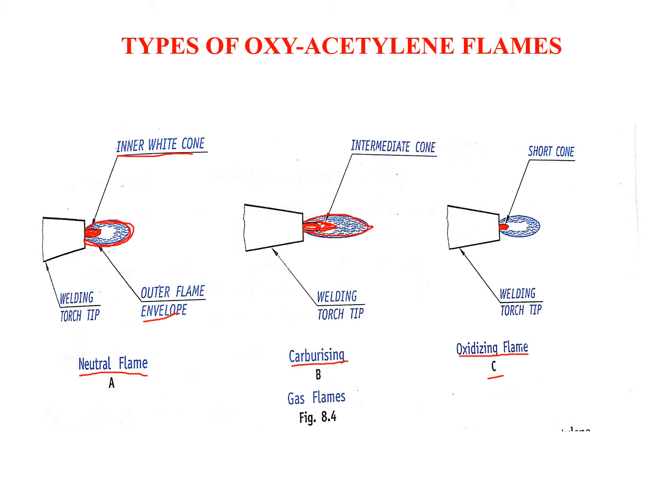As seen in the previous session on oxyacetylene welding, there are two cylinders: acetylene and oxygen. Using knobs and pressure gauges we can vary the percentage of oxygen and acetylene, giving us different types of flames. To summarize: neutral flame uses equal amounts of oxygen and acetylene, carburizing flame uses excess acetylene, and oxidizing flame uses more oxygen and less acetylene.